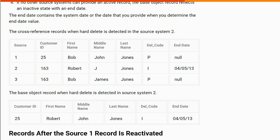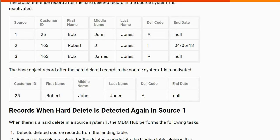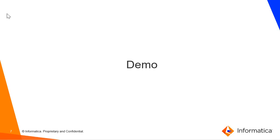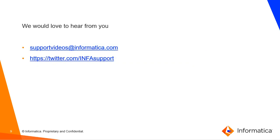If a record is reactivated — received again from the source — it gets reactivated and flows to the BO as the latest update. That was a quick demo of the configuration needed to enable HDD. You can refer to all this information from the configuration guide, and there are KBs with the lines of code needed for post landing and post stage user exits. We'd love to hear your feedback on these videos. Thank you.